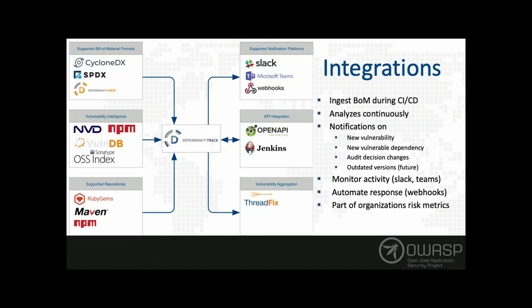Once you ingest your bill of materials — top left — Dependency Track works with multiple sources of vulnerability intelligence and performs outdated version detection. Every time you upload a bill of materials we analyze it, but if you don't upload one we still analyze it every 24 hours. It doesn't do any good if the information just sits there, so we have notification support — you can get Slack or Microsoft Teams notifications.